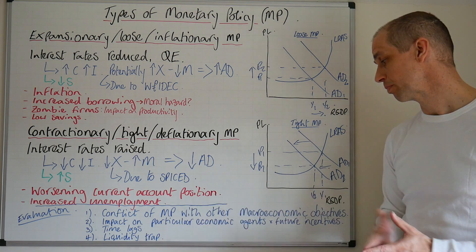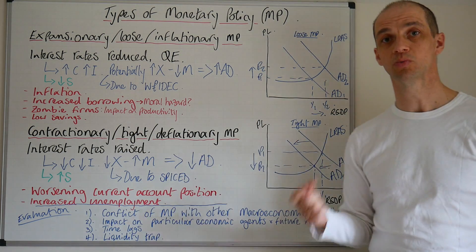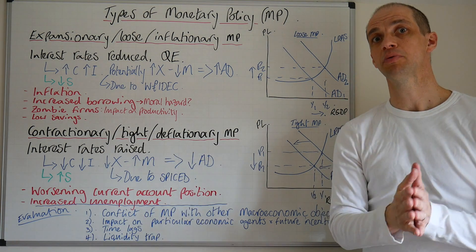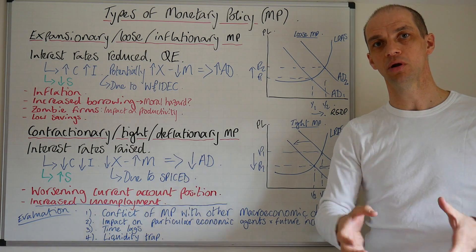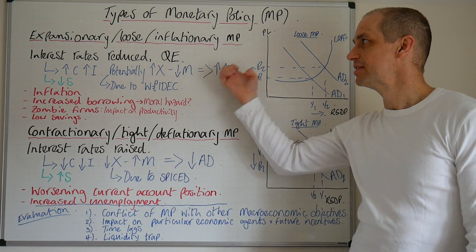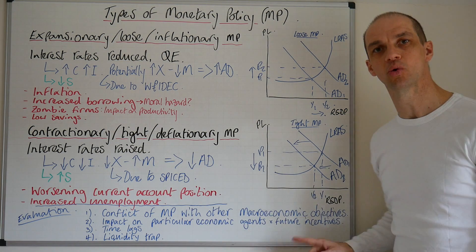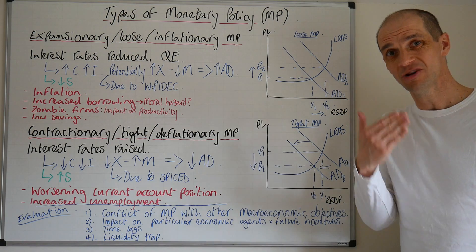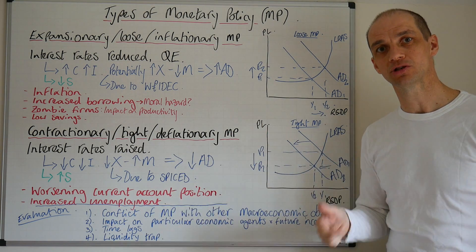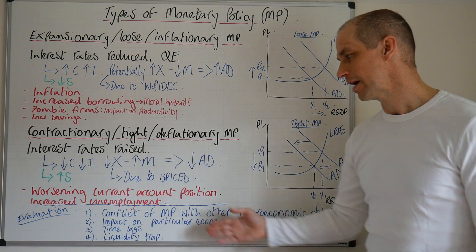For final evaluation: we've got the conflict of monetary policy with other macroeconomic objectives — that's a nice obvious one to go for. What about the impact on particular economic agents within the economy? Having interest rates so low for such a long time has actually penalised those people that have been very prudent and have saved a lot. Whereas for borrowers, having such low interest rates and having inflation actually erodes the real value of their debt. This can distort incentives and actually encourage people to borrow more, since inflation will help to erode the actual value of that money. It can disrupt future incentives and financial prudence.